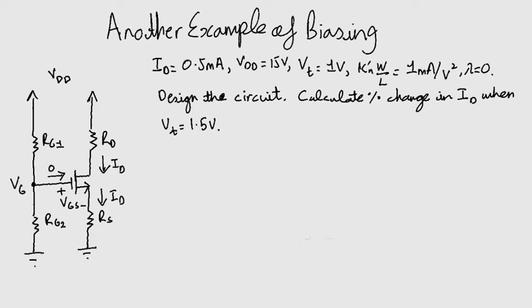In this example, you are required to design the circuit given on your screen to establish a DC drain current ID equals 0.5 milli amperes. VDD is to be 15 volts and the MOSFET characteristics are also on your screen.